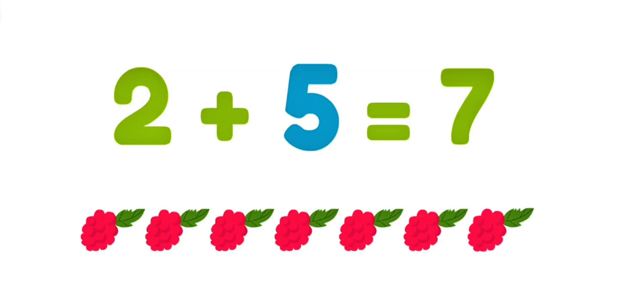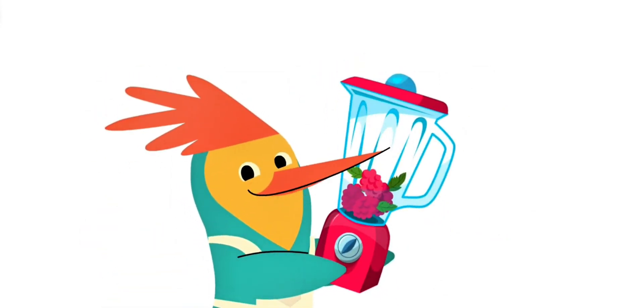Let's do some addition! I have two berries, but I want seven! How many more do I need to get to seven? Let's count! One, two, three, four, five! Two plus five equals seven berries! Time to make a smoothie!